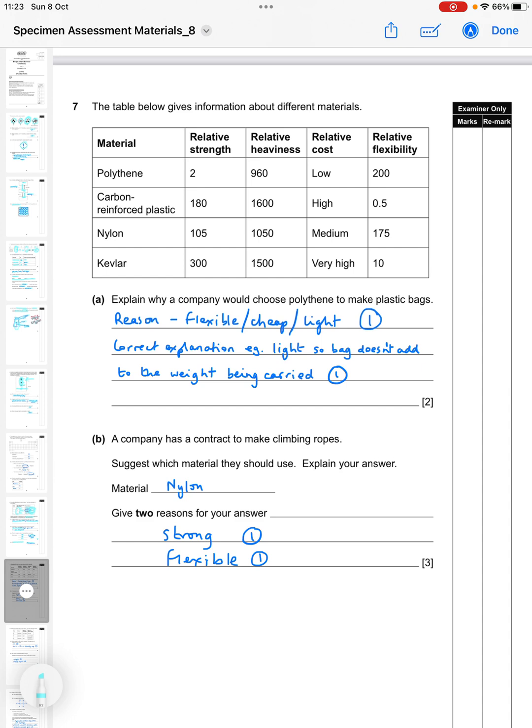Question seven: the table gives information about different materials - polythene, carbon reinforced plastic, nylon and kevlar - and tells you their strength, their relative heaviness, their relative cost and their relative flexibility. Relative just means comparing them to each other. Explain why a company would choose polythene to make plastic bags. If we look at polythene here, it's quite low strength but its cost is low and it's flexible, and it's light. Just one mark for picking one of those, and then your second mark is for the correct explanation, so like for example saying it's light so the bag doesn't add to the weight being carried.